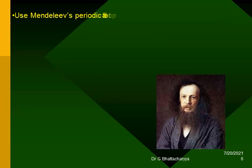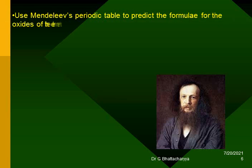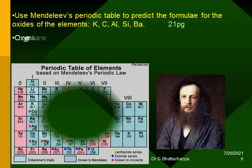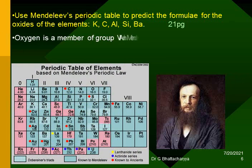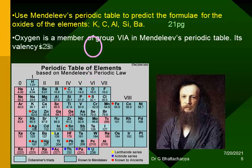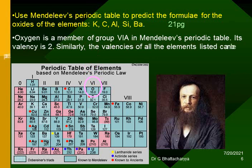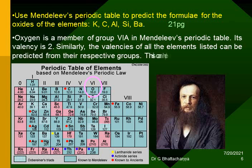Use Mendeleev's periodic table to predict the formulae for the oxides of the elements K (potassium), C (carbon), Al (aluminium), Si (silicon), Ba (barium). Oxygen is a member of group 6A in Mendeleev's periodic table and its valency is 2. Similarly, the valencies of all the elements listed can be predicted from their respective groups, which helps in writing the formulae of their oxides.